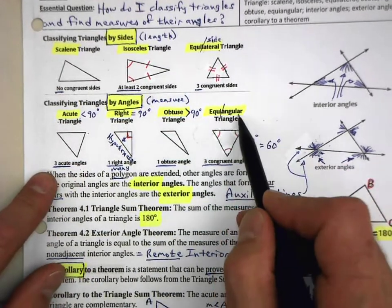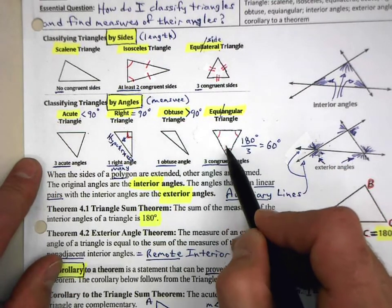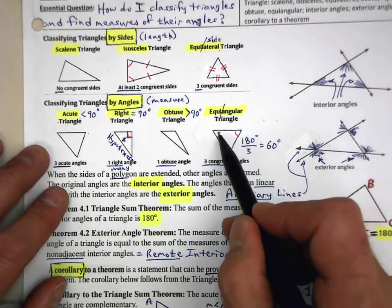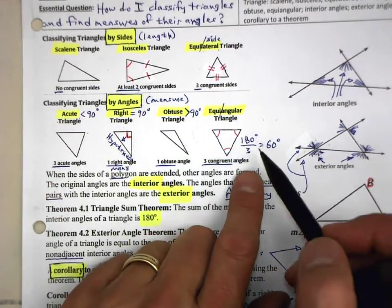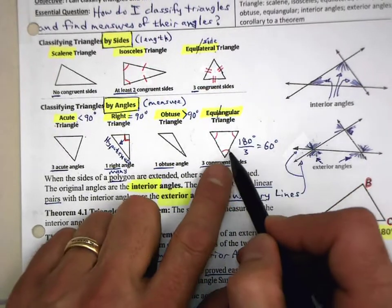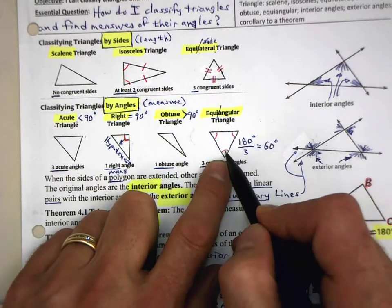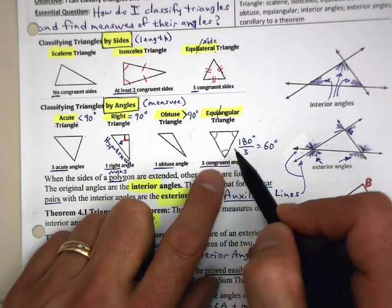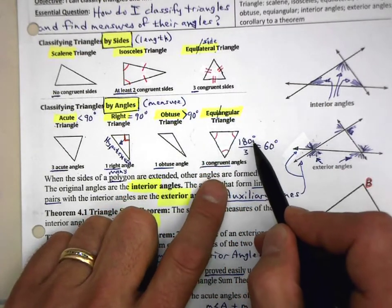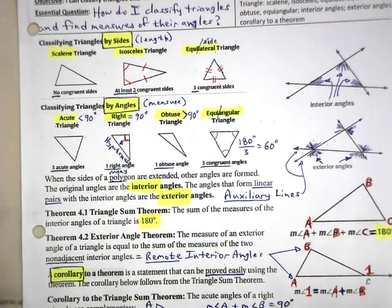There's also the equiangular triangle, when all three interior angles are the same measure — they are congruent with each other. We will discover that each of those angles is 60 degrees, because the sum of the interior angles of any triangle is 180 degrees. Since these three angles are congruent to each other — that's what equiangular means — you take 180 degrees and divide it by three, and that gives you 60 degrees.